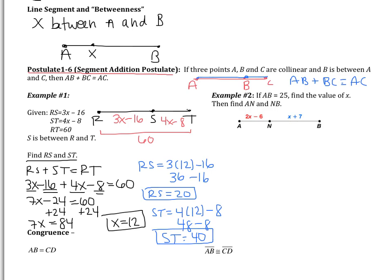Before we finish, I like to just think, does my answer make sense? So does it make sense that RS would be 20 and ST would be 40? The answer should be yes. Now why does it make sense? Let's think about it. The entire segment is 60. So my two parts are going to have to add to be 60. 20 and 40 is 60. So my answers make sense. That was example 1.